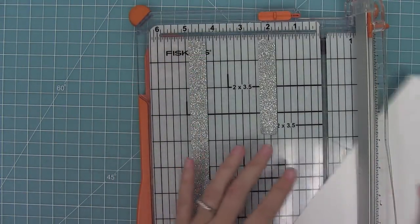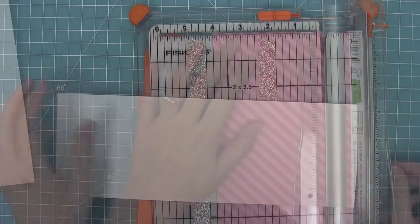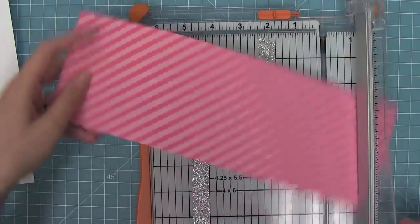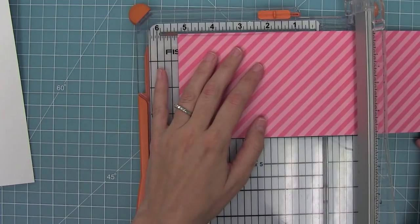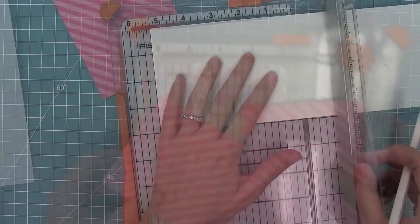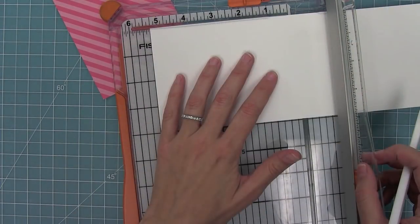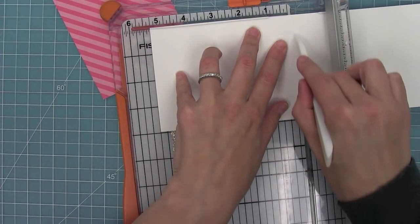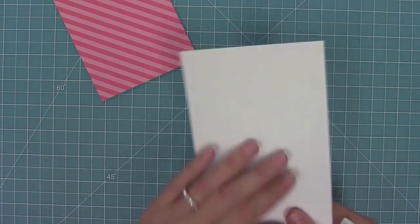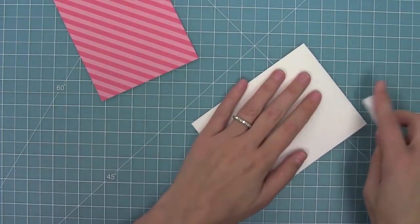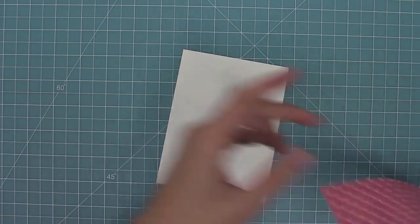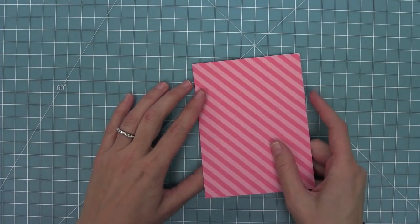Now I'm going to trim down a card base which is going to be four by five and a quarter. I'll also trim down some let's polka in the meadow striped paper for the background of this card. The stripes kind of remind me of this airmail kind of thing which really goes along with our mail theme. I think it's going to be a really cute background for this Valentine's Day card. I'm going to go ahead and fold this card base, layer that cute little striped paper right on top of it and then I can layer my scene on top of that.